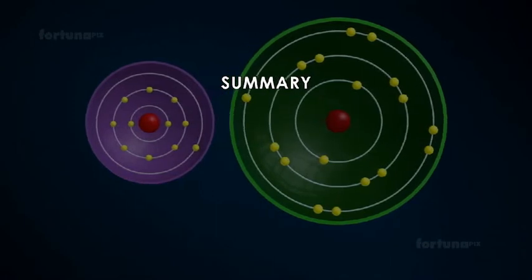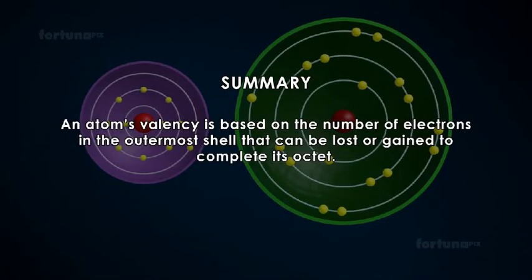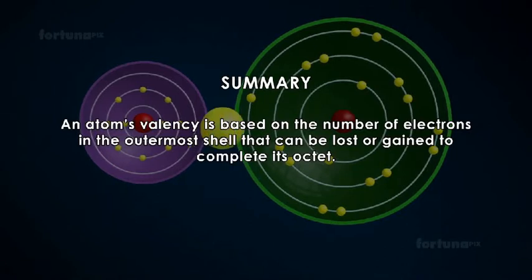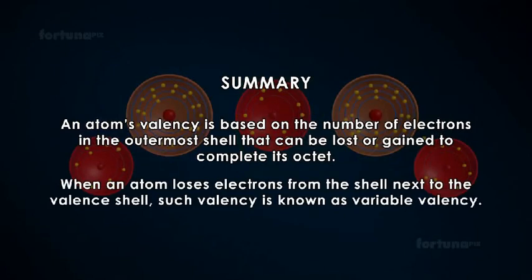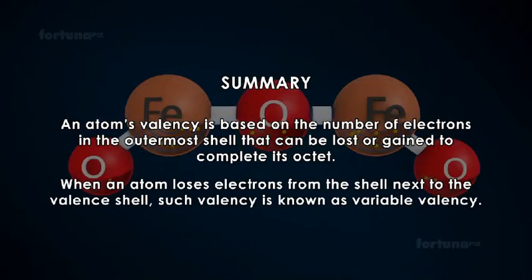Summary: An atom's valency is based on the number of electrons in the outermost shell that can be lost or gained to complete its octet. When an atom loses electrons from the shell next to the valence shell, such valency is known as variable valency.